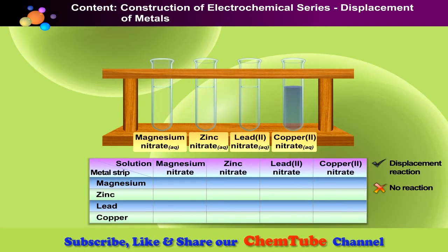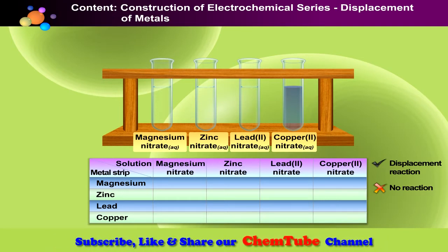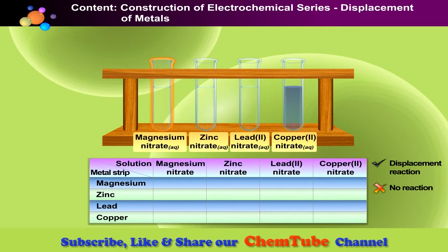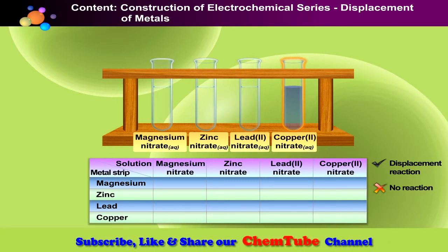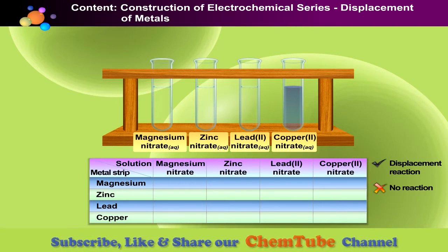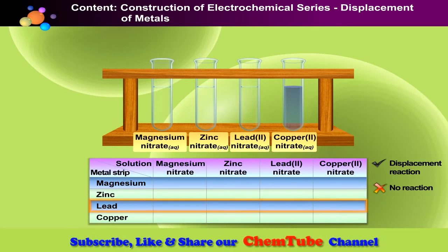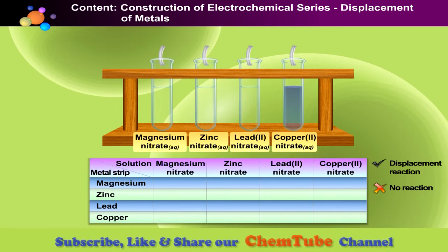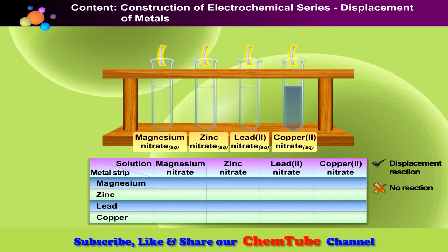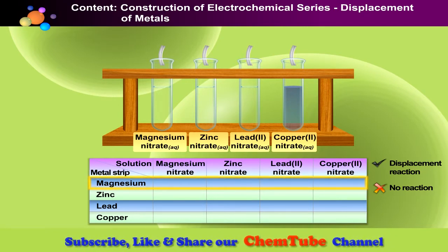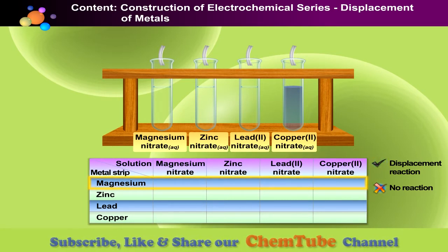Let us construct the electrochemical series based on the ability of a metal to displace another metal from its salt solution. There are four types of solutions: magnesium nitrate solution, zinc nitrate solution, lead-2 nitrate solution, and copper-2 nitrate solution in four separate test tubes. There are also four metal strips — magnesium, zinc, lead, and copper. The metal strip will appear on top of each test tube. Click on the metal strip to place it in the test tube and observe what happens. Record all observations in the observation table by dragging the symbol representing the displacement reaction or the symbol representing no reaction.